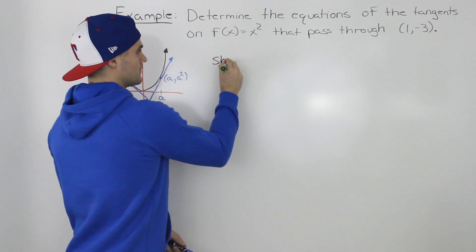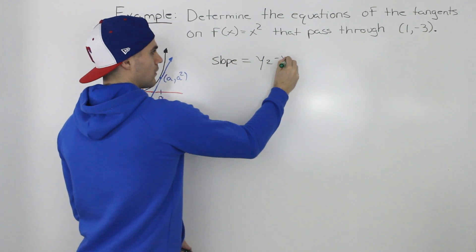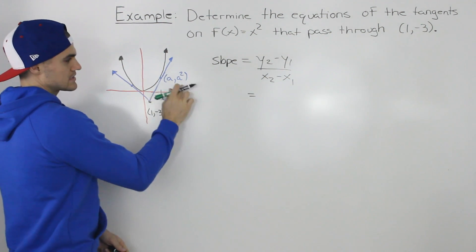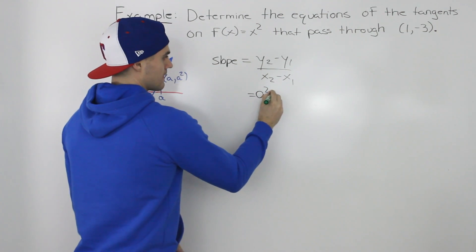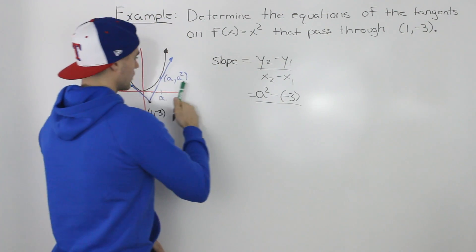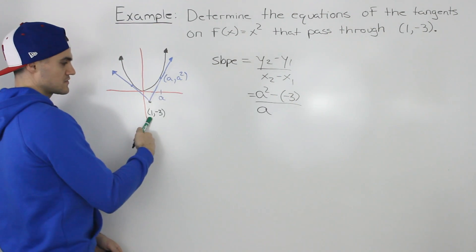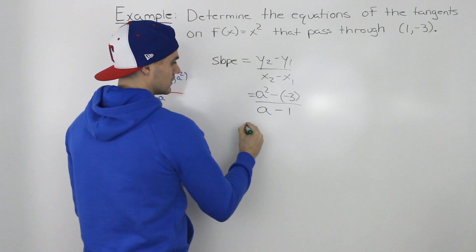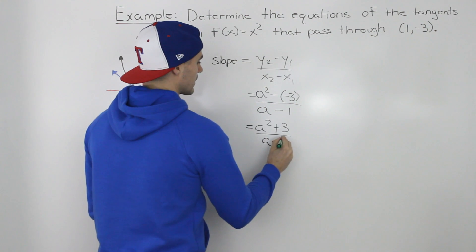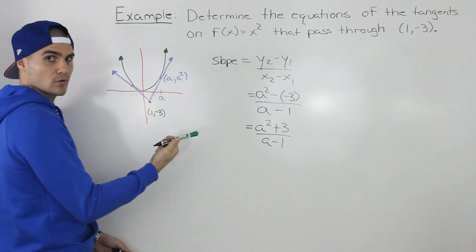We know the slope of the line equals rise over run, so slope equals (y₂ - y₁) / (x₂ - x₁). So y₂ is a squared, minus y₁ which is -3, over x₂ which is a, minus x₁ which is 1. This simplifies to (a squared + 3) / (a - 1). So that is the slope of this line, found using the rise over run formula.